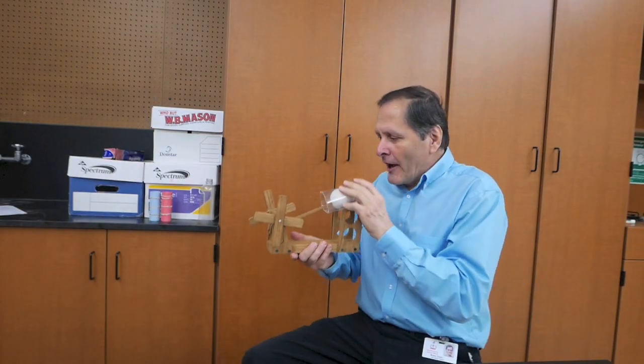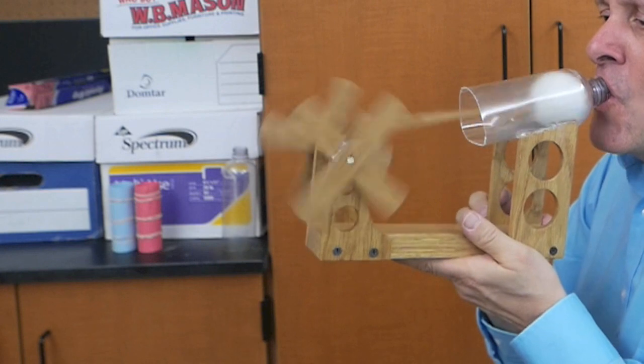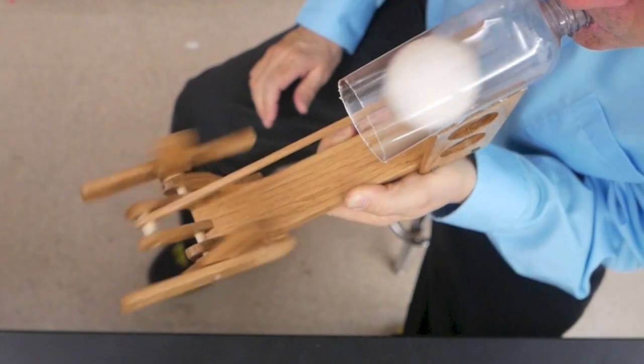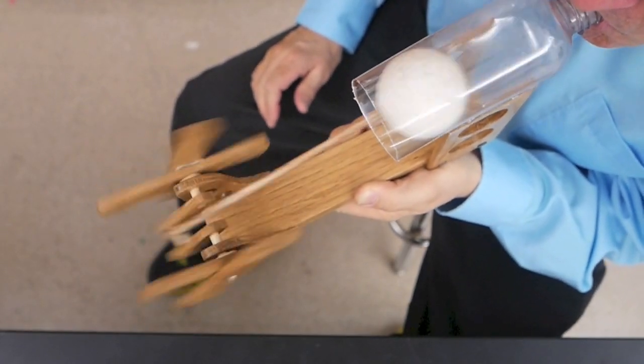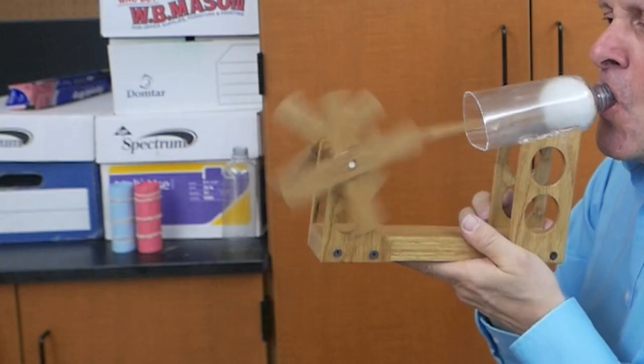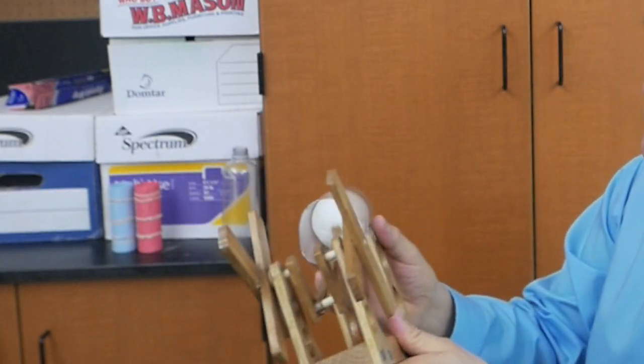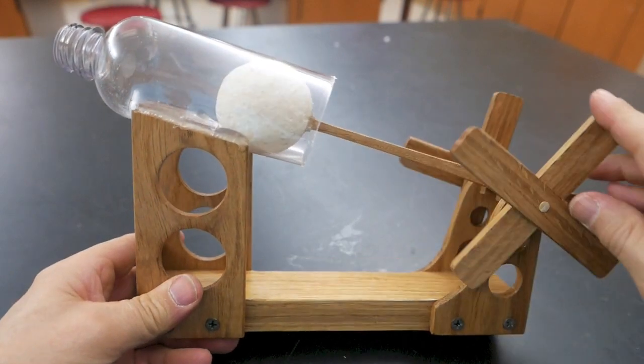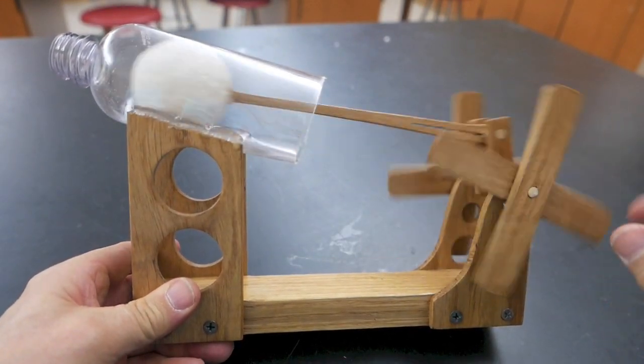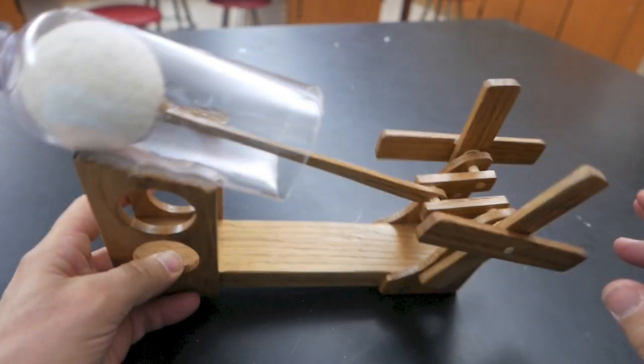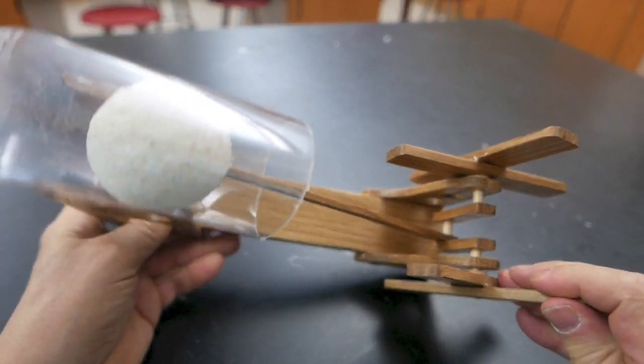Now finally here's the biggest version I have. All the pieces for this engine are made out of wood except for the cylinder which is a cut-off soda bottle. And the piston is made from a styrofoam ball that was sanded down to make it fit.